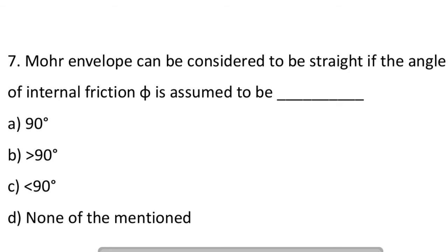Next question: Moore envelope can be considered to be straight if the angle of internal friction phi is assumed to be. Option A: 90 degree. Option B: greater than 90 degree. Option C: less than 90 degree. Option D: none of the mentioned. So the answer is D, none of the mentioned.